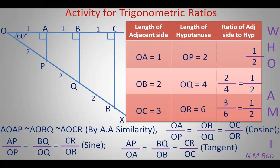The key insight is that the value of a given ratio for an angle is independent of the actual length of the sides of the triangle, but it depends only on the ratio of the lengths of the two sides involved in it.